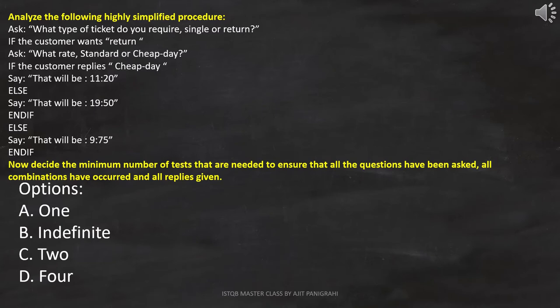The question is: analyze the following highly simplified procedure, and after analyzing this procedure, decide the minimum number of tests that are needed to ensure that all the questions have been asked, all combinations have occurred, and all replies given.